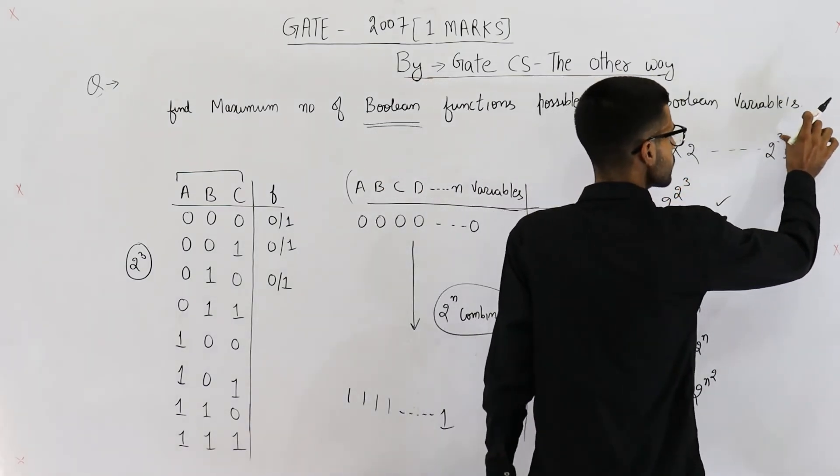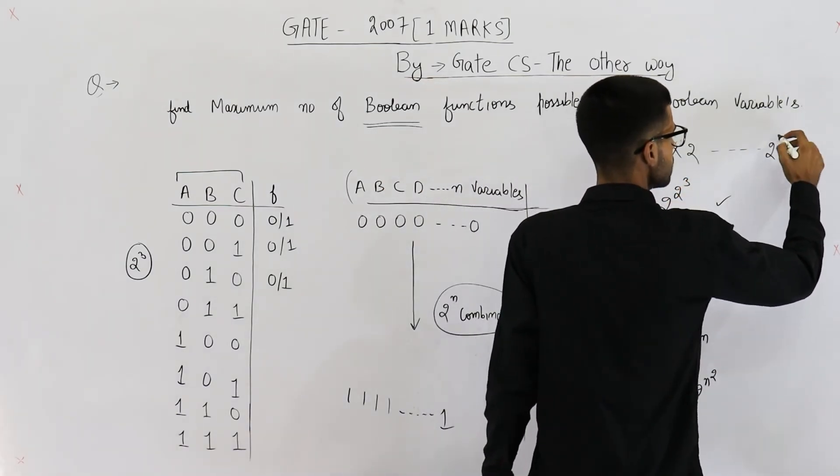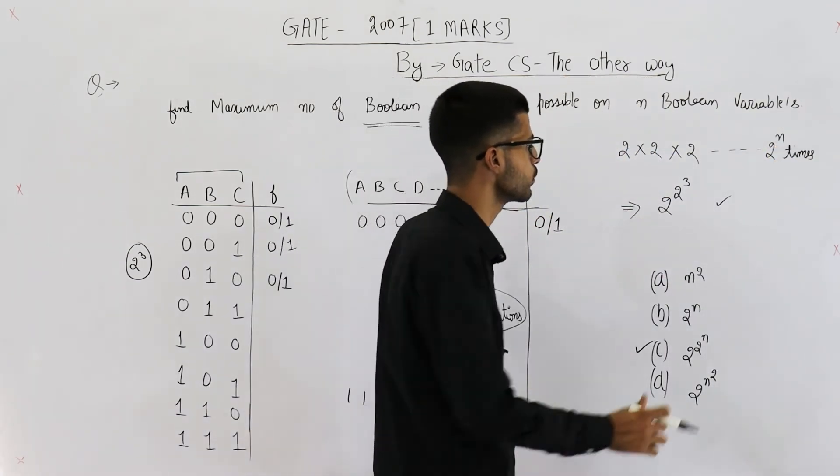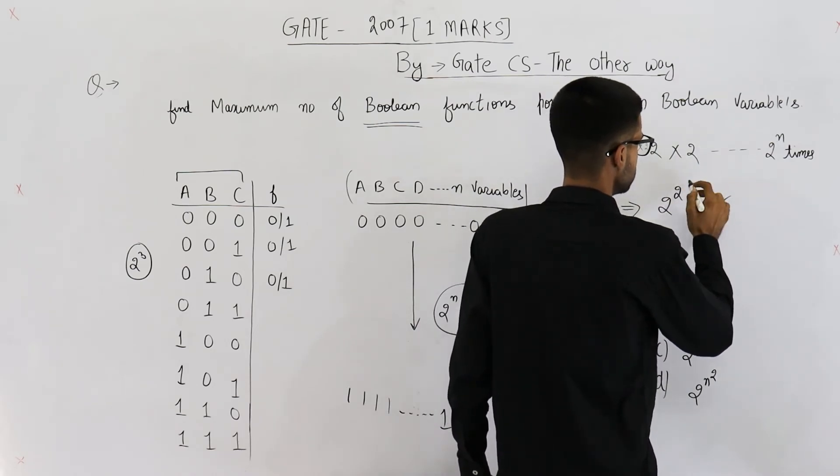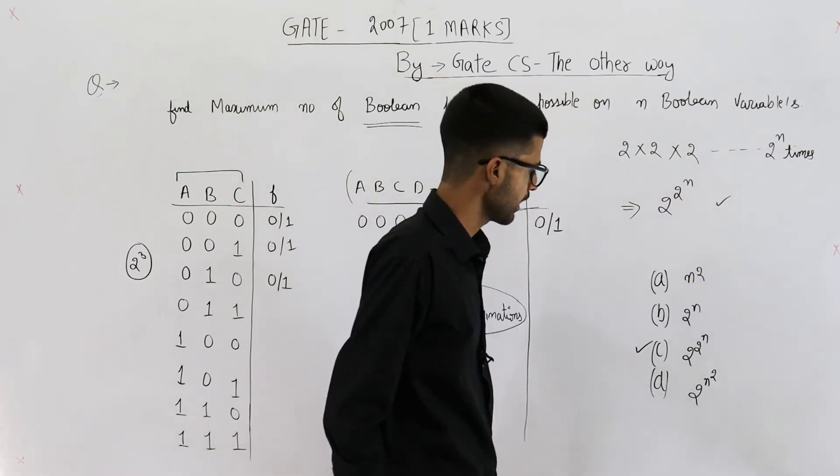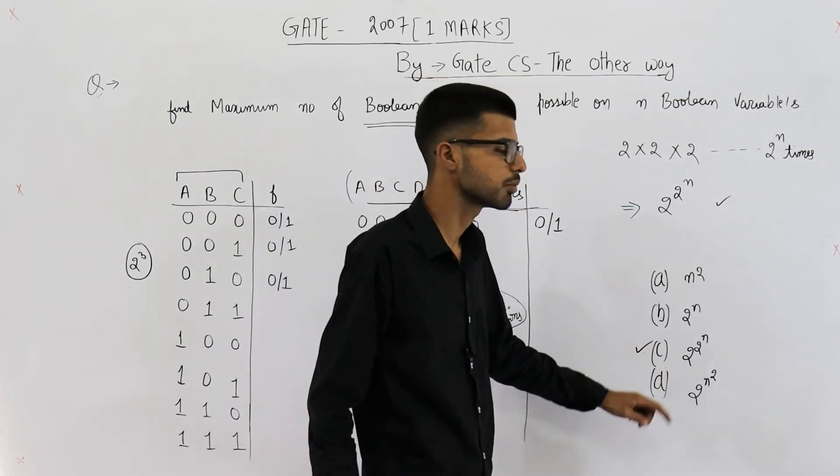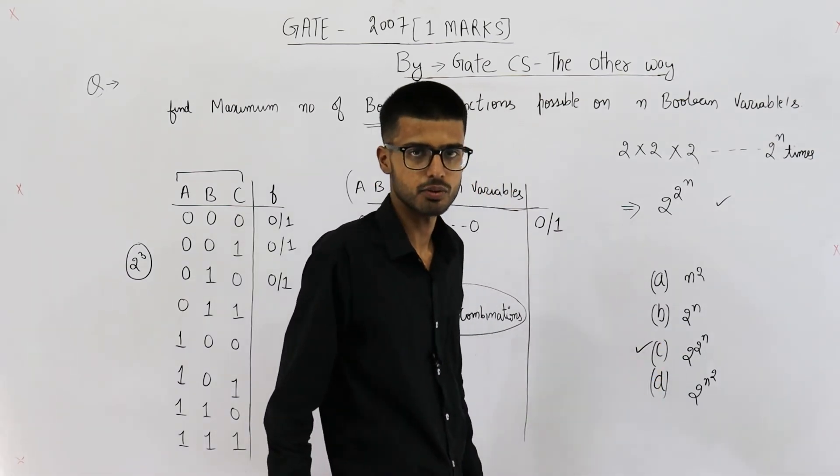You have 2 raised to the power n such inputs. So the answer is going to be 2 raised to the power 2 raised to the power n. That means c part is correct. Your answer is 2 raised to the power 2 raised to the power n.